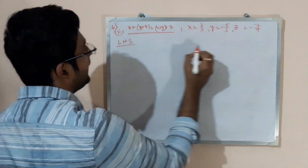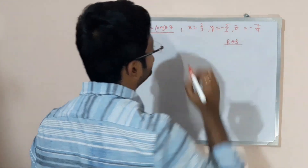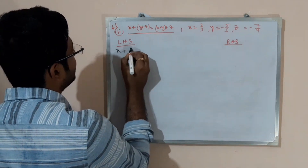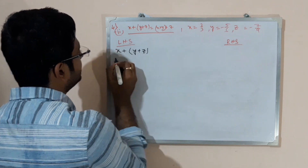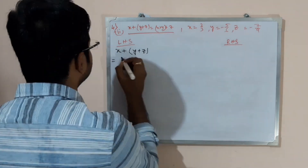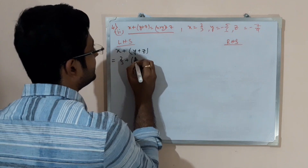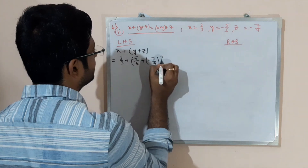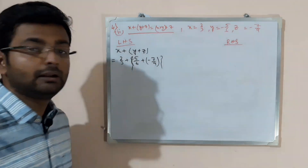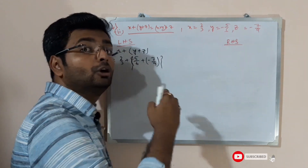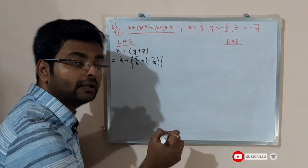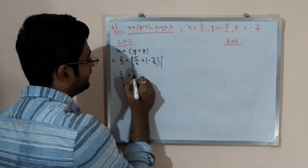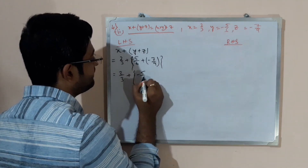We do Left Hand Side and Right Hand Side. Left Hand Side is given as x + (y + z). The value of x is 2 by 3, plus bracket minus 5 by 6, plus of minus 7 by 9. Be careful: plus sign and minus sign together require an extra bracket. So 2 by 3 plus, then we solve the inner bracket: minus 5 by 6.